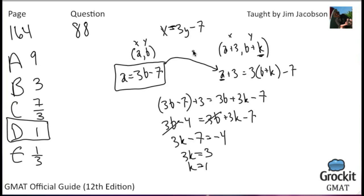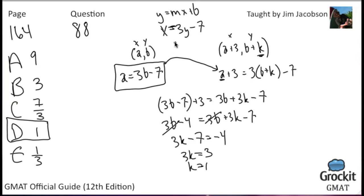We didn't need to convert to slope-intercept form (y equals mx plus b). It would have still worked, but it would have introduced fractions like 1/3, making calculations harder. It's easier to deal with multiples of 3 than multiples of 1/3. This was essentially a simple substitution question.